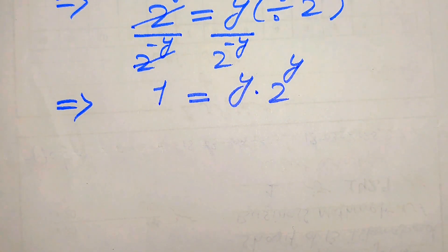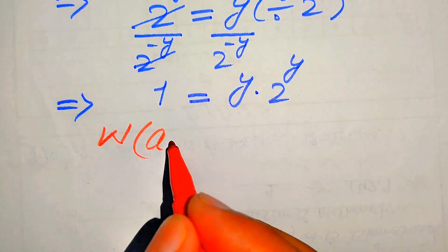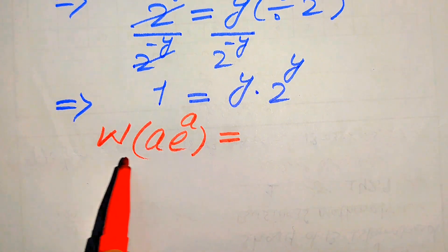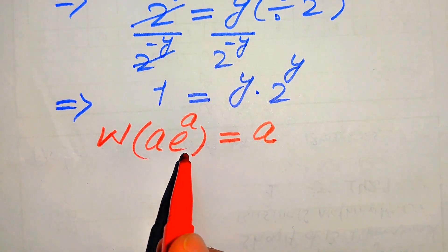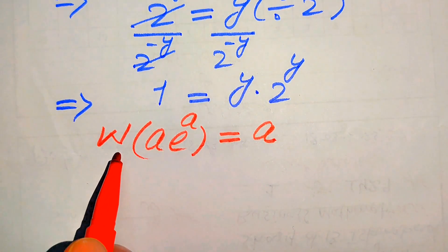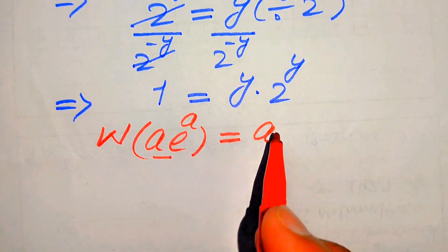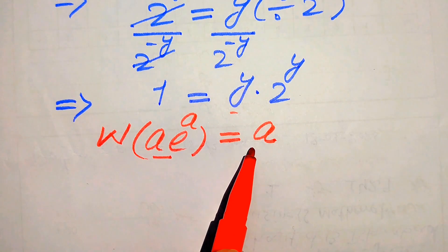In the next step, to solve this problem, we need to use the Lambert W function. The Lambert W function is defined as: W of (a times e to the power of a) equals a — that is, the output of this function equals the exponent of e. In order to apply it, we first need to convert our terms into that form, meaning we make the base e exponential and multiply the exponent by the coefficient.